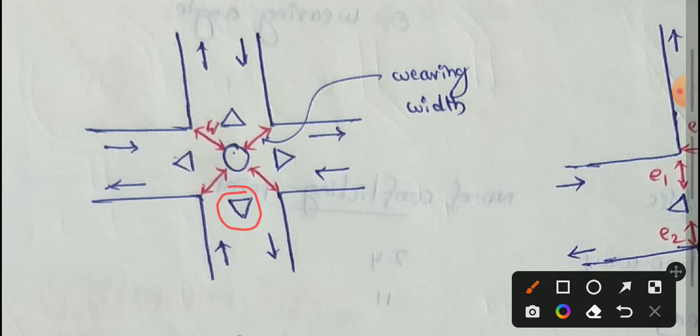So, triangular shape of channelizing islands - two channelizing islands. The clear distance between two channelizing islands is called weaving length.